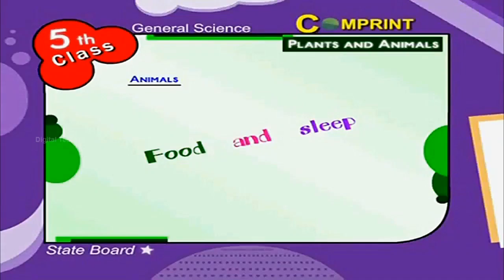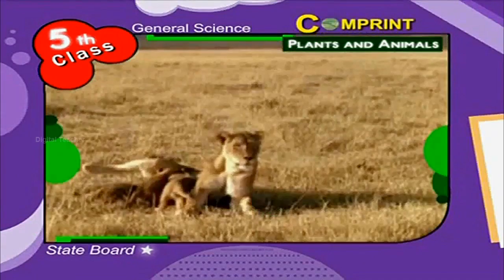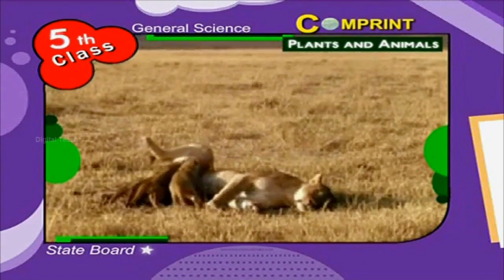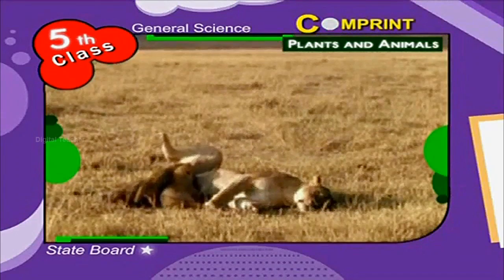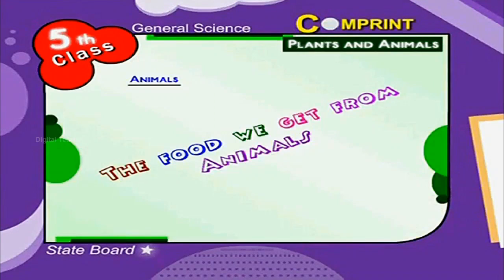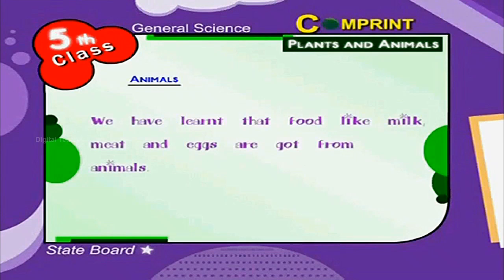Food and sleep. Animals also need food and sleep like human beings. The food we get from animals: we have learnt that food like milk, meat and eggs are got from animals.